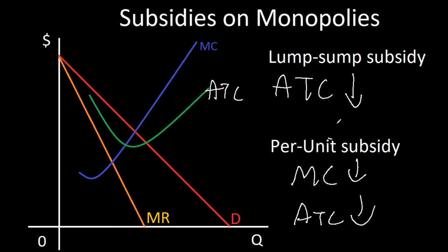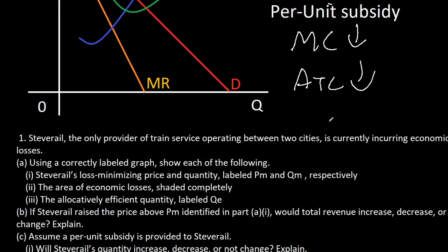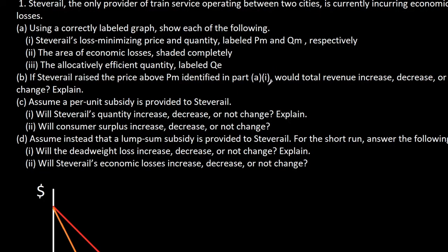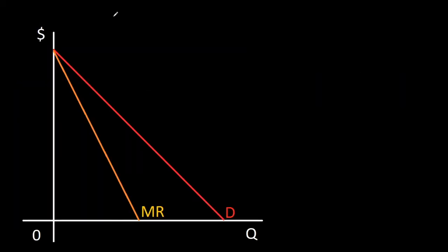Now that we know how subsidies affect the cost curves, let's apply these concepts to a real 2012 AP Micro FRQ. Before we continue, try the problem yourself. Steve Rail, the only provider of train service, which means it's a monopoly, is currently incurring economic losses.